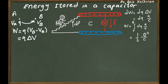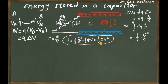You can express the electrostatic energy of a capacitor in terms of its charge Q and capacitance C. Since C, Q, and V are related by C = Q/V, there are three equivalent expressions for the total energy: U = ½Q²/C in terms of Q and C, U = ½QV in terms of Q and V, or U = ½CV² in terms of C and V.